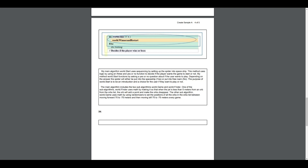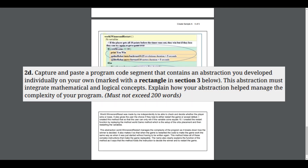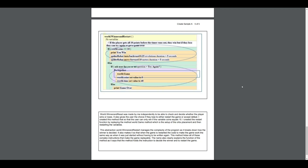Let's look at 2D. The rubric says: copy and paste a program segment that contains an abstraction you developed individually on your own, marked with a rectangle in section 3 below. This abstraction must integrate mathematical and logical concepts. Explain how your abstraction helps manage the complexity of your program. Looking at the example, the abstraction is 'world winner and restart.' It definitely has mathematical and logical components — a logical if-else component and a mathematical condition where, when they equal 10 coins, they win. Instead of writing this code over and over, you can just call 'world winner and restart' and the code runs there.